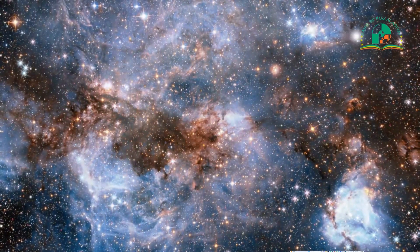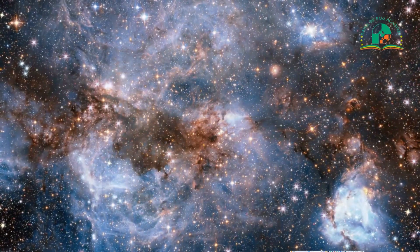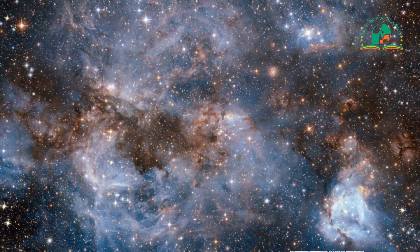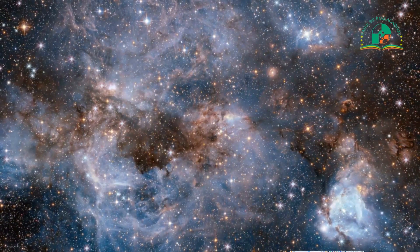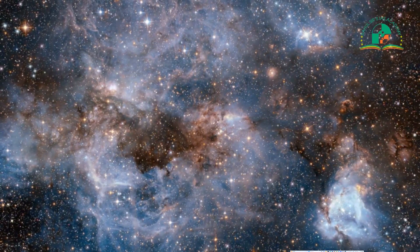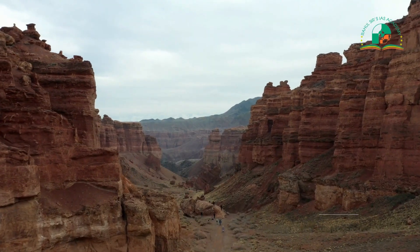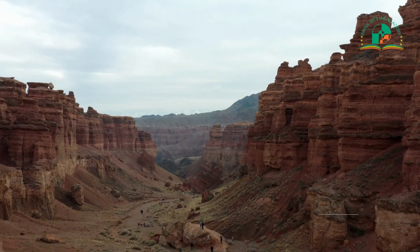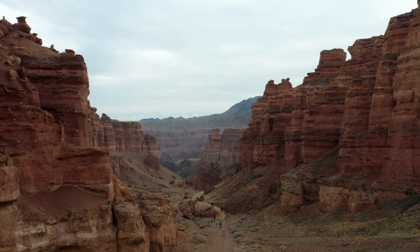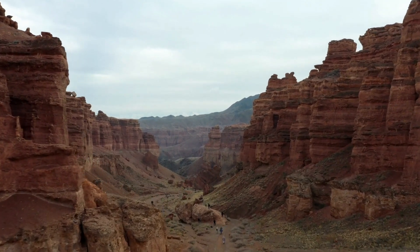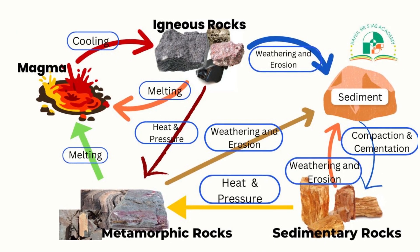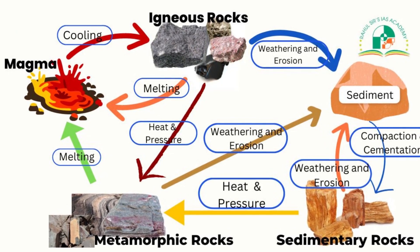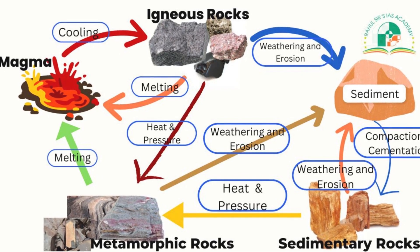There is a fundamental law in the universe which states that nothing stays permanent forever. In other words, change is the only constant. The same rule applies for rocks as well — no rock on the earth remains as it is forever. In this video, we shall talk about the rock cycle and the associated rock cycle diagram. Let's begin.